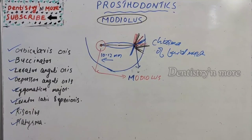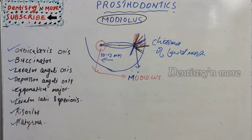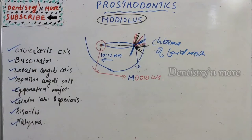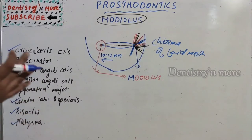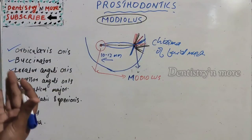The importance of the modiolus is that we have so many muscle fibers, and none of these muscles contain fibers that have more than one bony attachment. They depend on the fixation of the modiolus to allow contraction. So these fibers have only one bony attachment and they depend on the fixation of the modiolus to allow contraction. This is basically associated with denture fabrication.